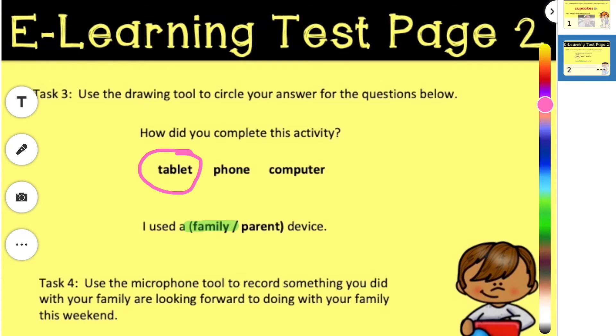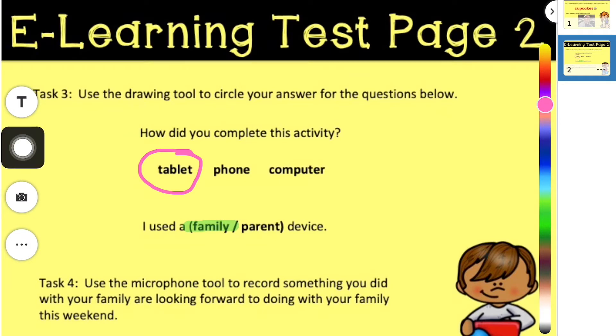I'm in my Seesaw assignment, and the last set of directions says use the microphone tool to record something you did with your family or are looking forward to doing with your family. When I press the microphone for the first time, I will need to enable access to the microphone on the device that I'm using.